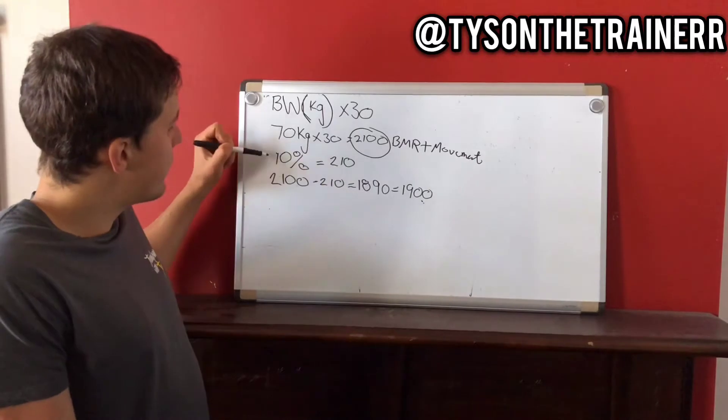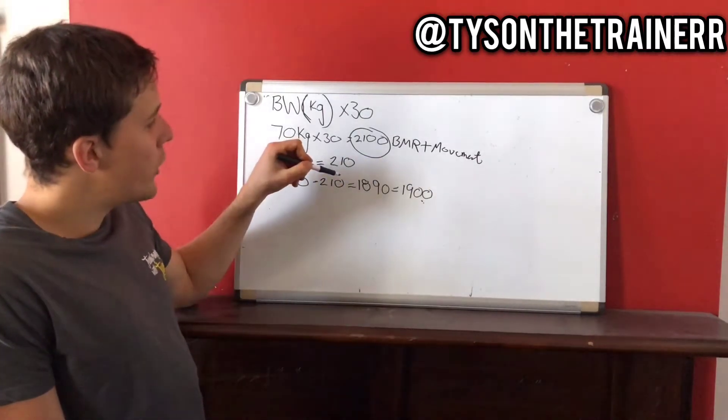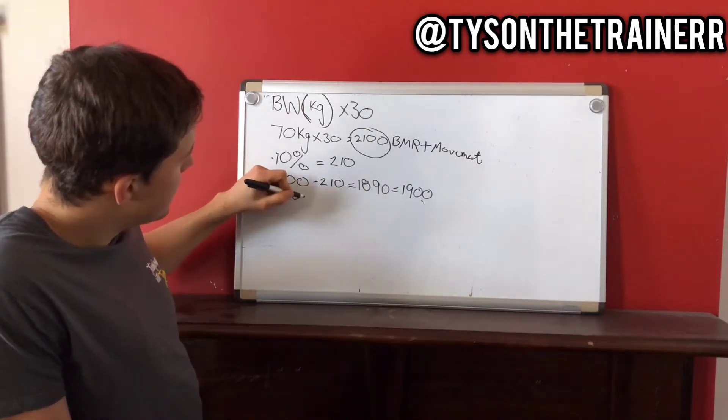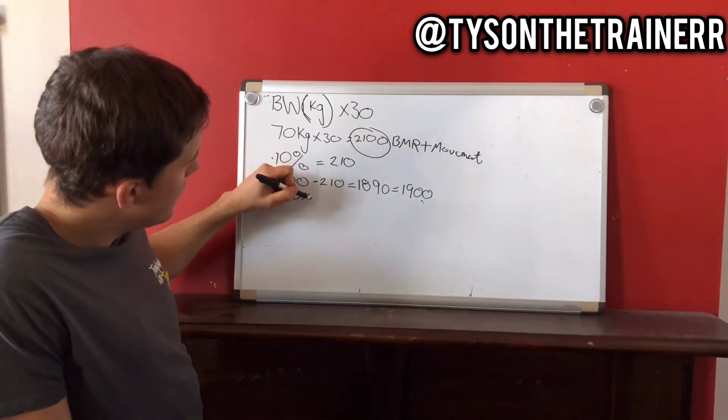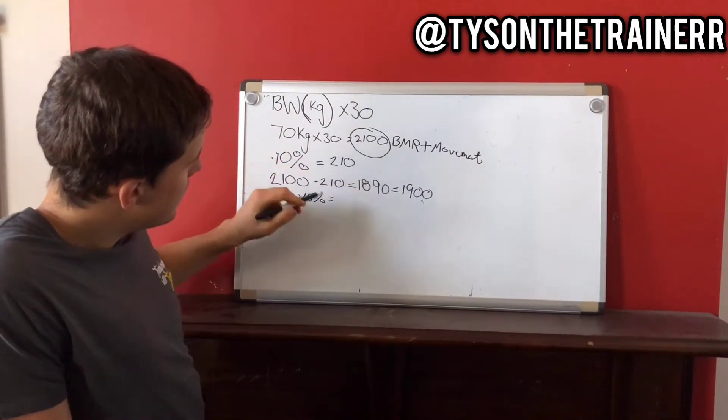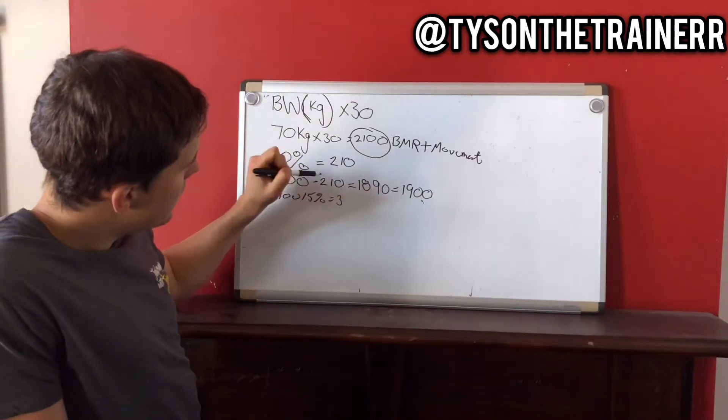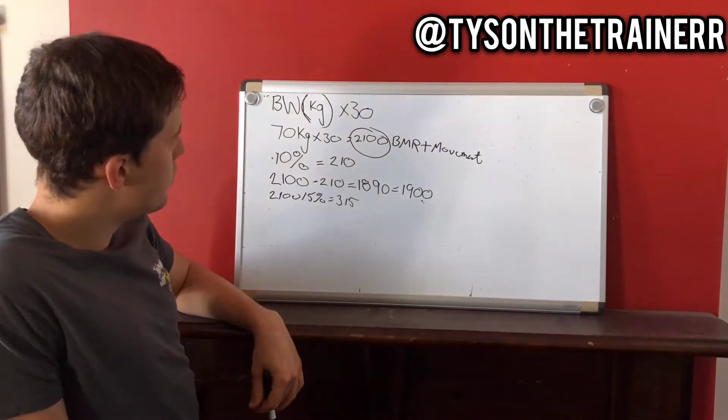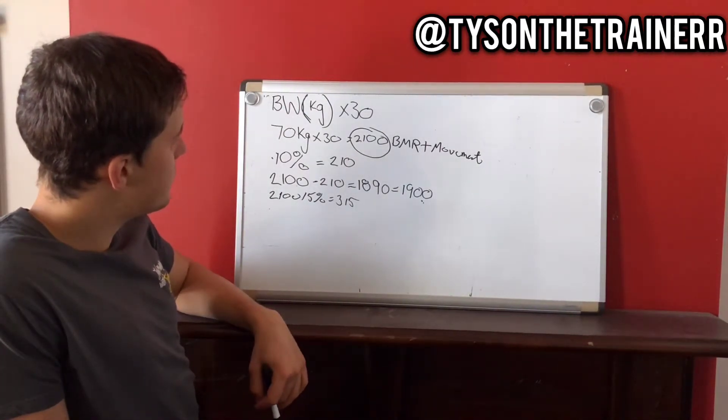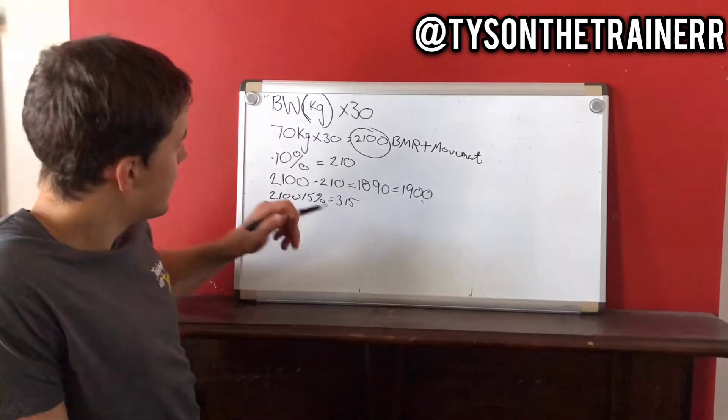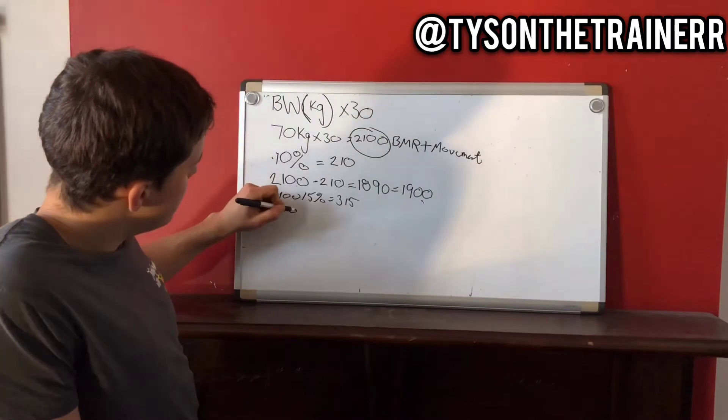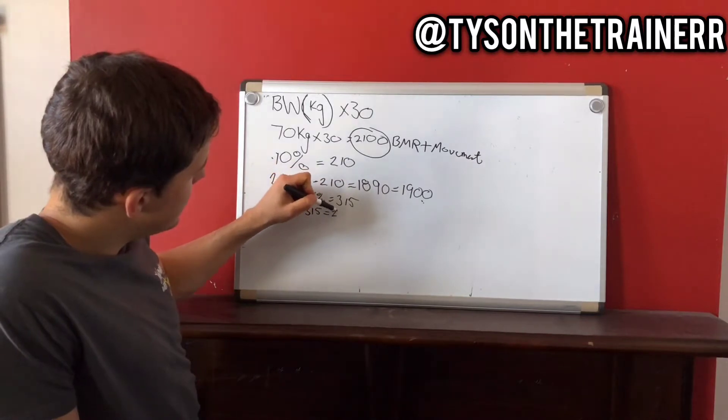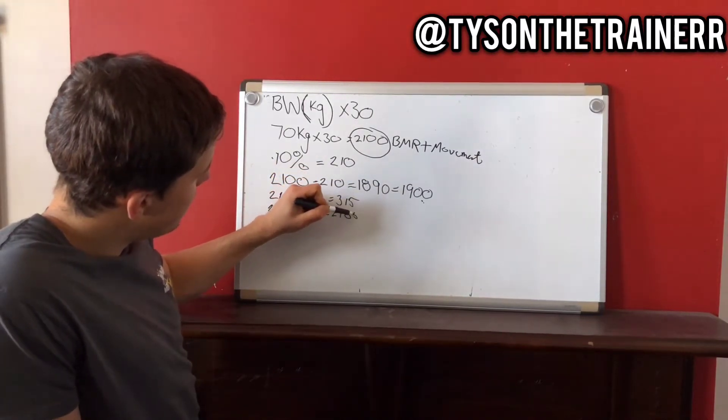So I would always say start conservatively first at 10%. And then if it's still not working, then take away 15%. So if we did 2,100, and then we did 15% of that, which is 315 calories, if that's right. Is that right? 10% of 2,100 plus another 5% is 105. Yeah, 315 calories. So if we did 2,100, take away 315, that would equal 1,785 calories.